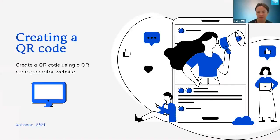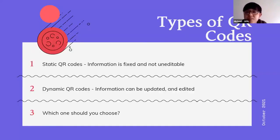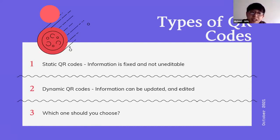The next thing I'm going to go over is creating a QR code. Some of you might not need to create one, but it's helpful to see how. If you have a business or want someone to go to a link on your flyer, you might want to create one. There are different types: static QR codes, where the information is fixed and can't be edited, and dynamic QR codes, where information can be updated and edited — usually used for marketing. For a one-time thing, people use the static QR code.